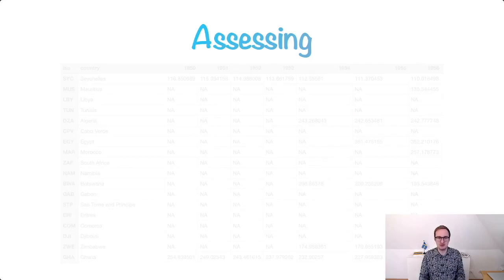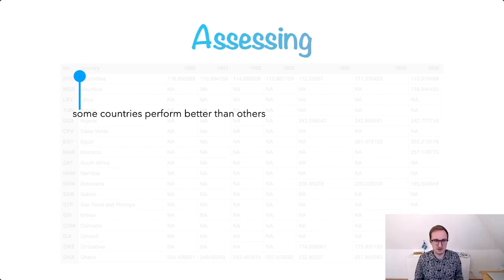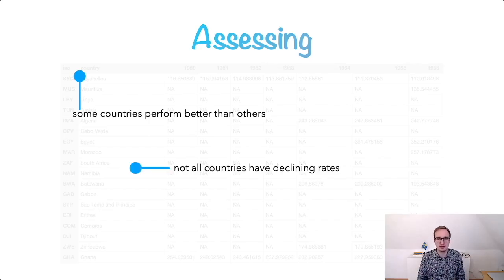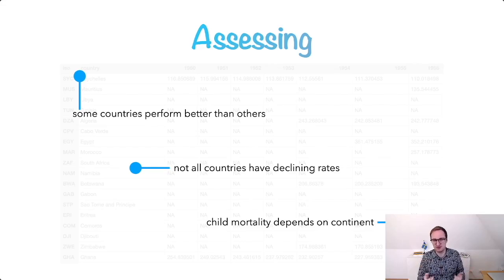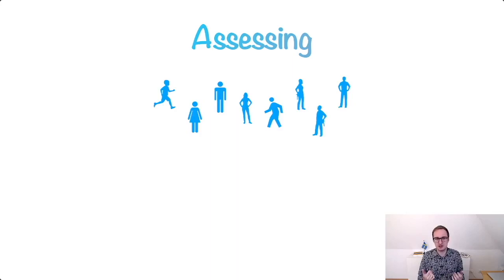What does that mean regarding our child mortality dataset? We can ask questions and see: yes, child mortality rates are going down, but if we look deeper, some countries perform better than others — that might be an interesting story. There are actually countries with rising child mortality rates, which we didn't see in the initial chart. Child mortality also depends on continent, which might be an interesting story: how does Europe behave compared to Africa, Asia, or South America? These are things that aren't commonly known.